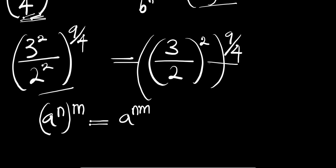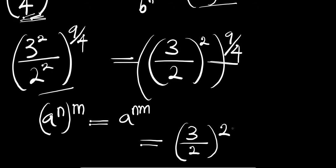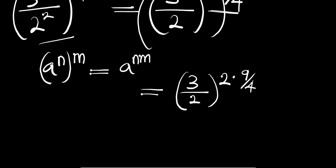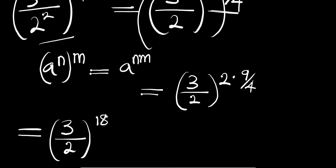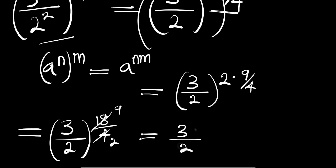So we are simply going to multiply these exponents and we are going to have (3 divided by 2), all to the power of 2 times 9 divided by 4. This gives us (3 divided by 2) to the power of 18 divided by 4. And from here, 2 cancels into 4 twice, giving 9, so this gives us (3 divided by 2) to the power of 9 divided by 2.